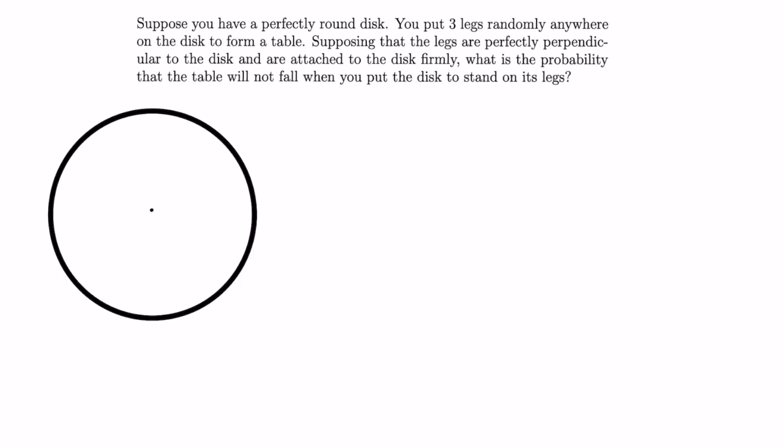So, we want to calculate the probability that the center of the circle lies in the triangle spanned by three points chosen uniformly at random from the disc. Since this probability is not dependent on the size of the disc, we can assume that it is a unit disc with center at (0,0) in our coordinate plane.